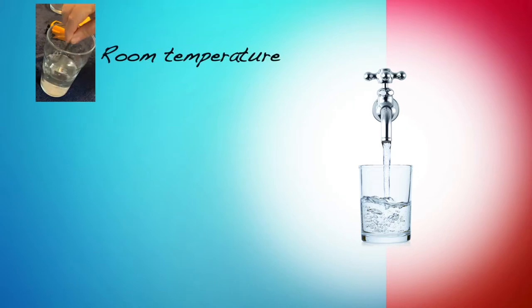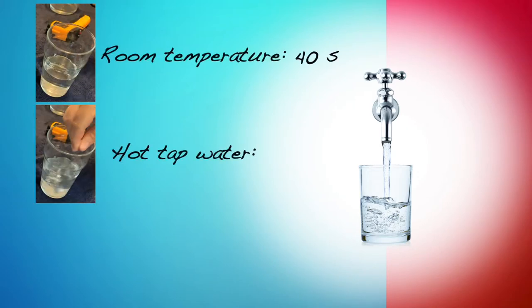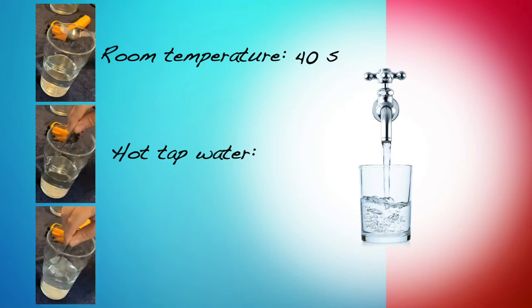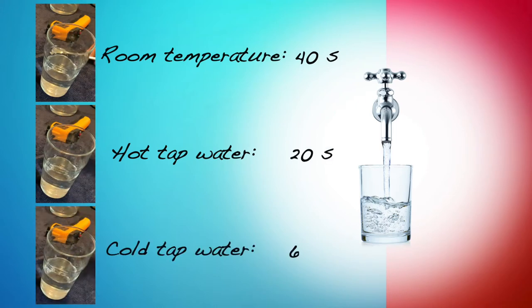Look at the timer when the sugar has dissolved, right down that time. Repeat with the hot and cold tap water. Run the taps for about a minute beforehand so they get to temperature. Did the sugar take different times to dissolve? I hope so, proving that the rate of dissolving depends on temperature.